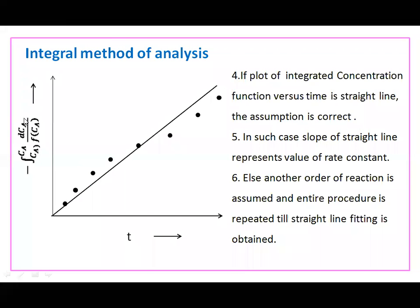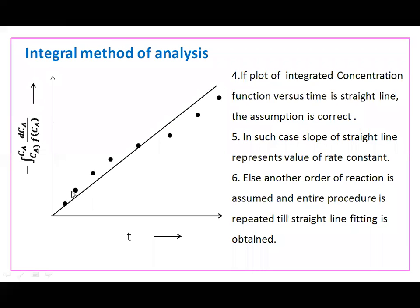If you plot the integral of dC_A / f(C_A) from C_A0 to C_A versus t, the dots represent the actual experimental data points. You try to draw a best-fit line such that some points fall on either side of the line. We find the slope of this line, which represents m — that is, the rate constant K. To check how closely the line fits the experimental data, you can find the regression coefficient R-squared.